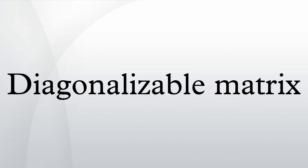If V is a finite dimensional vector space, then a linear map T from V to V is called diagonalizable if there exists an ordered basis of V with respect to which T is represented by a diagonal matrix.